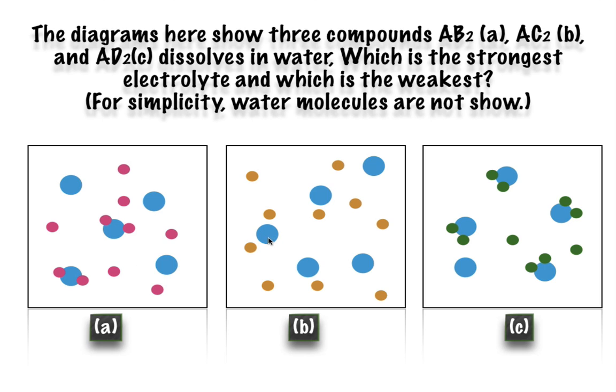If we look at letter B, letter B has five molecules, and I notice that all of the molecules are completely dissociated. If you compare that with A, I would say that B is a strong electrolyte compared to A. So this is probably the strongest electrolyte. Now let's compare C.